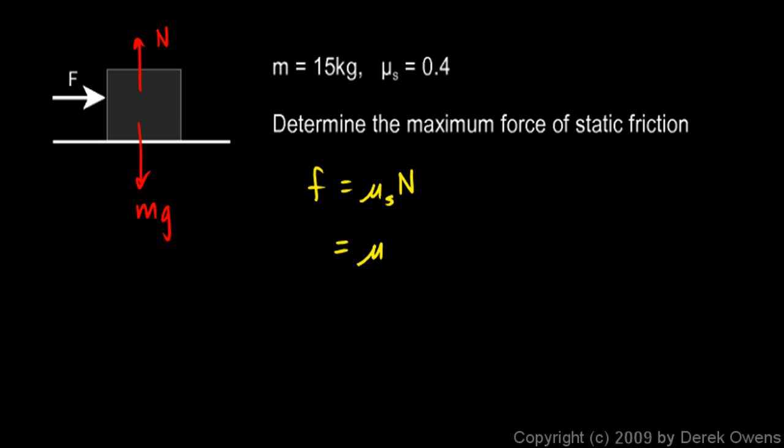So I can rewrite the equation to say mu s times mg. And from here it's pretty easy. We just put in the numbers 0.4 times 15 kg times 9.8 m per second squared. And I pull up my calculator and I multiply. 0.4 times 15 times 9.8 comes out to be 58.8 newtons. You can see the kilograms times the meter per second squared gives us the newtons.